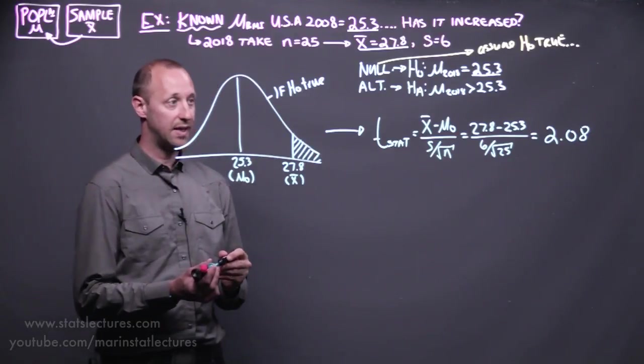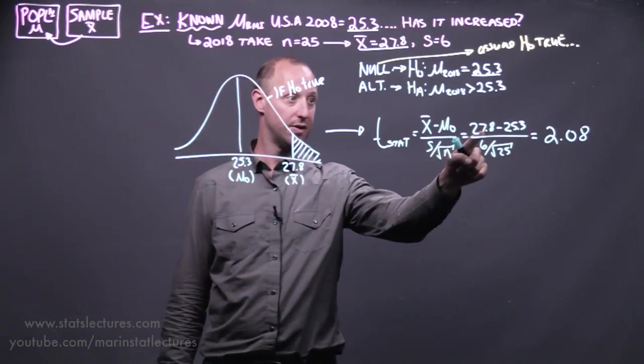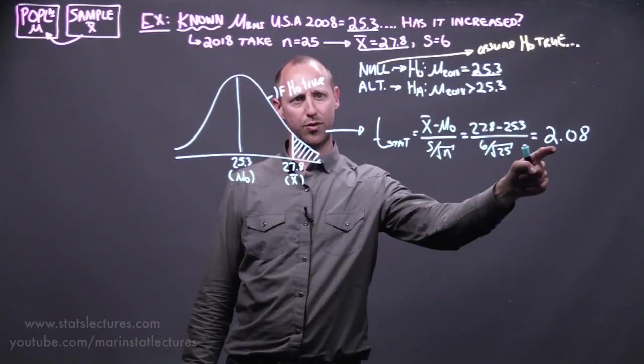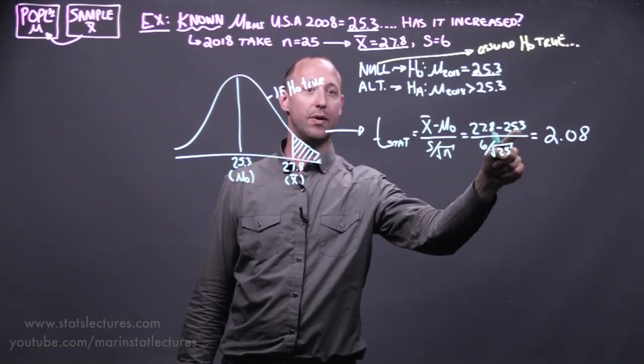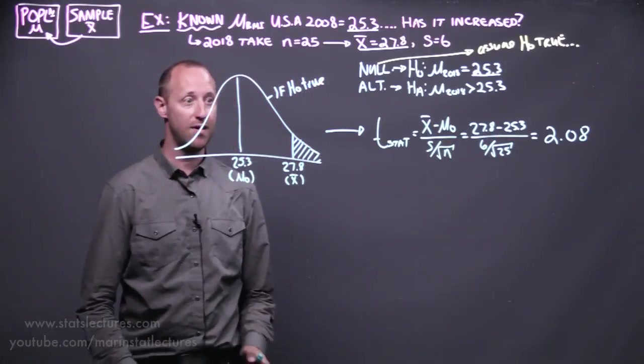So again, here the estimate that we got in our sample is about two standard errors above what we'd expect if our null is true, if there has been no change.